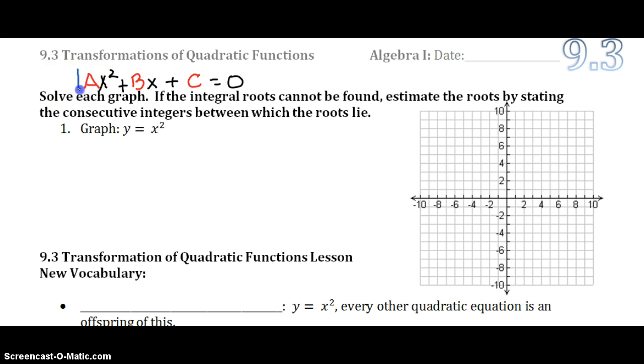I have written here standard form for a quadratic equation. So when we look at number 1, which is supposed to be a review problem, you'll notice that y equals, we have an understood 1 in front of our x squared. However, there's nothing with x, so 0 times x is 0, you don't write 0, and there's also not a c, so b and c are both understood to be 0.